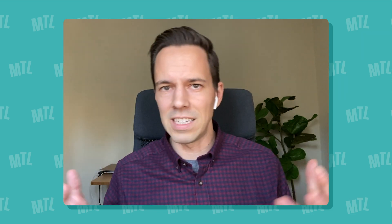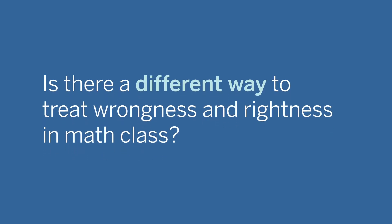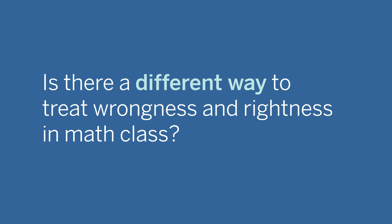It feels like math class has the most sharply defined sense of right and wrong, correct and incorrect of any class that we teach. And students respond to that sense and are eager to find out, am I right? Am I wrong? They are fed that sense by us, our curriculum, grading practices, all of that. And I'm here wondering with Bethany, is there a different, a better way to treat wrongness and rightness in math class?